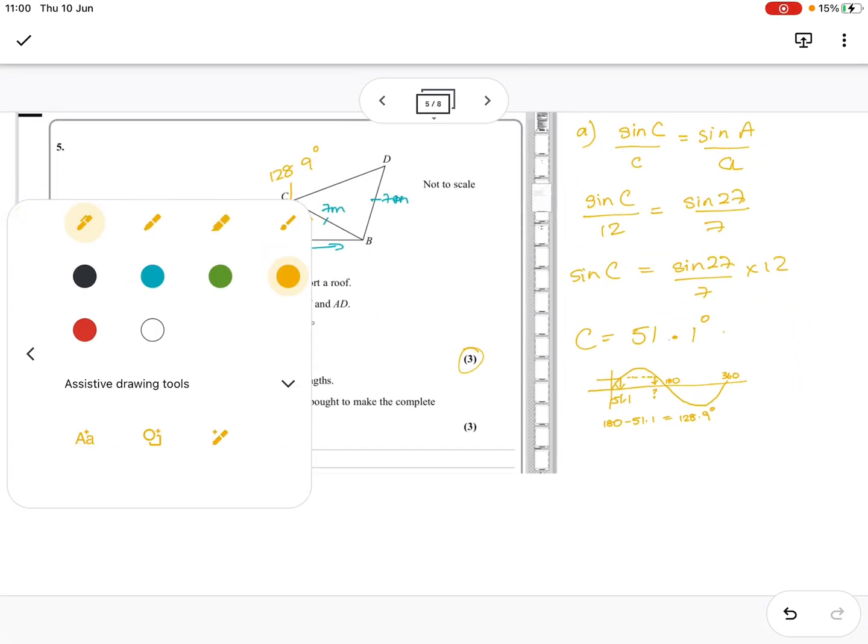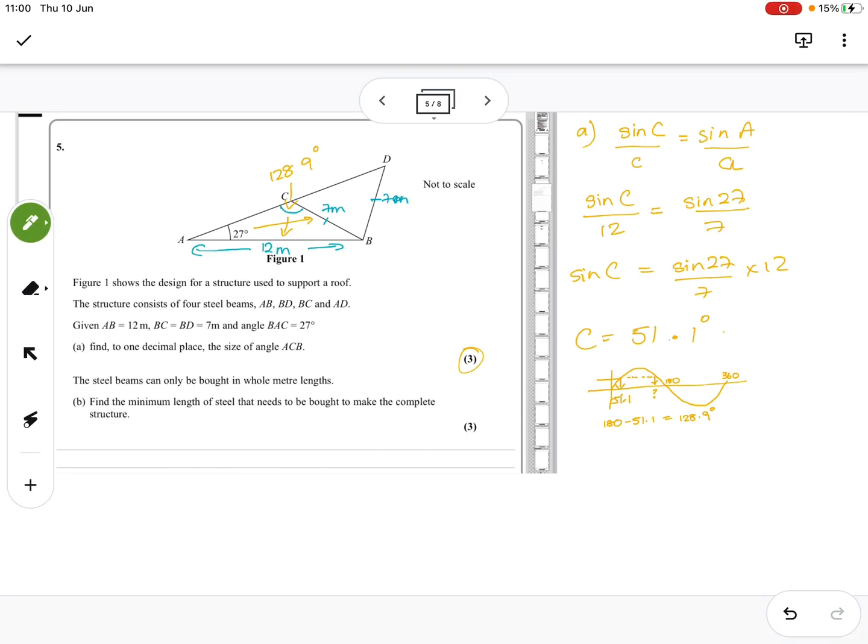Okay. So if we then look at the next question, the steel beams should be what whole length, find the minimum length of steel. So we need to add it all up. So what we've got at the moment is 12 plus 7 plus 7 plus AD. So we need that length. So we could think about it separately, obviously, or we could think about it as a whole. So we just need to maybe get some of the other angles.